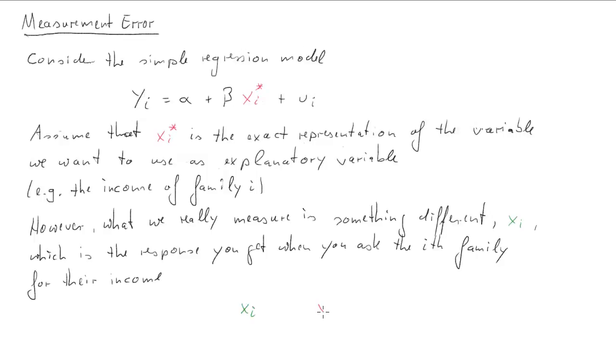And you can imagine if I asked you what exactly your income is you wouldn't be able to answer exactly. Now xi and xi asterisk are different and they're different by this term vi and this is what we call the measurement error. So to summarize, we have an observed value xi but that's different from the unobserved value xi asterisk.